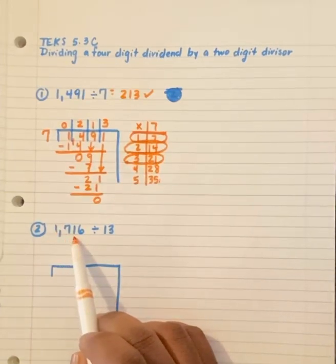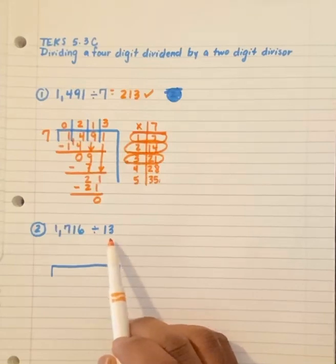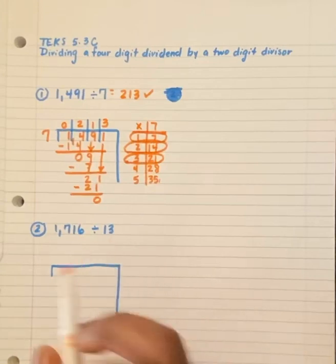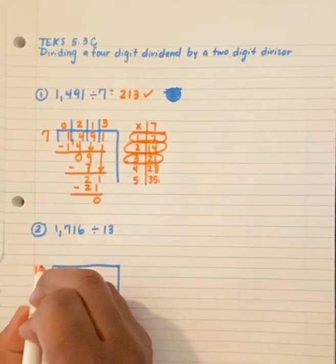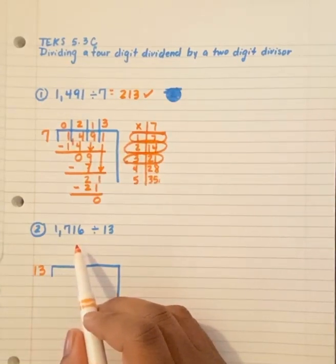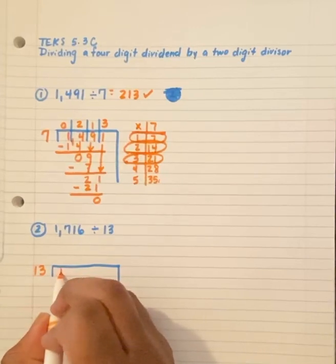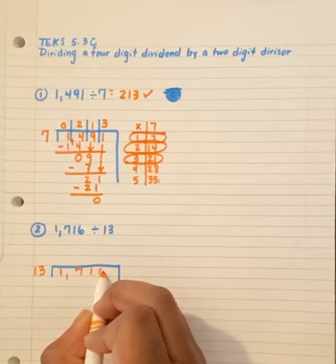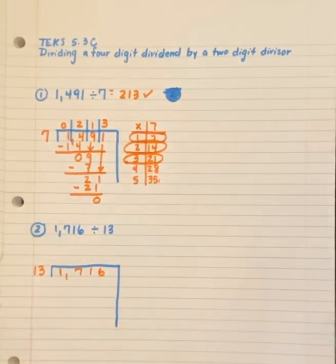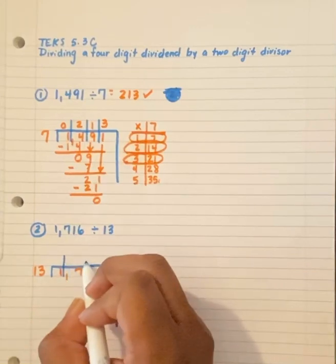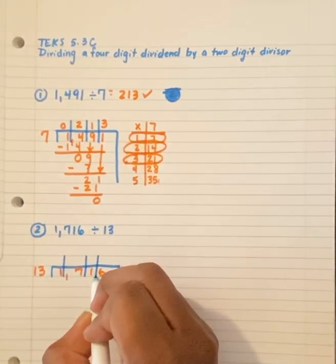1,716 divided by 13. 13 is my divisor. So, 13 goes outside the house. 1,716 is my dividend. And this goes inside the house. 1,716. Remember, my first step is to create a place value chart so that I don't put numbers in the wrong place value. And I separate each digit.